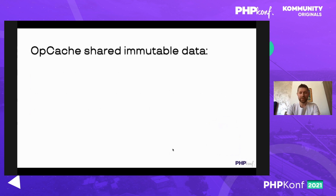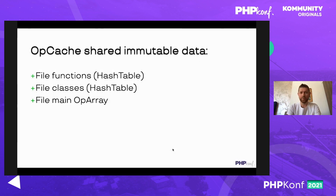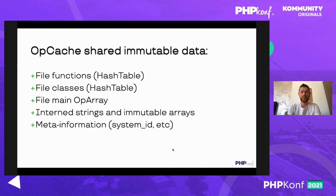Let's check what's inside op cache. We have file functions stored as an array represented by a hash table. We also have all our classes stored in the cache, all information about scripts as op arrays, interned strings, immutable arrays, and meta information about system ID used to verify that this version of op cache is compatible with our PHP runtime — because if the version differs from the current environment it's better to not use it or regenerate it.